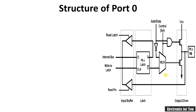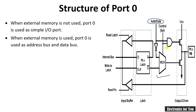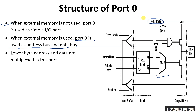This is the structure for port 0. You can clearly see that one MUX is used here, because it can serve as address and data lines for the external memory. When no external memory is connected, port 0 is used as a simple I/O port. If external memory is connected, port 0 works as an address and data bus — the lower-order address bus and data bus are multiplexed here.